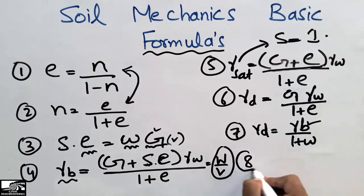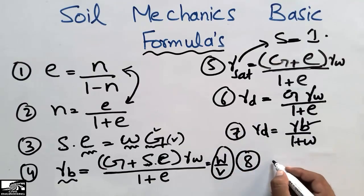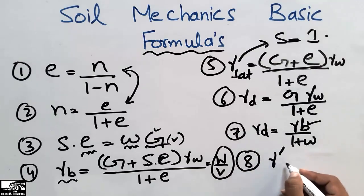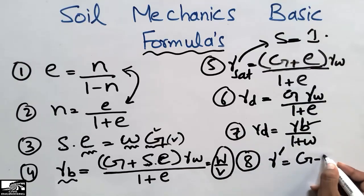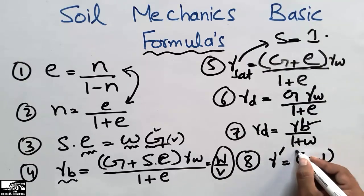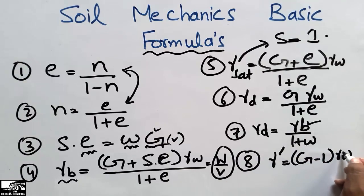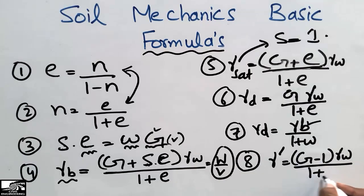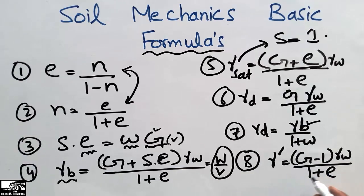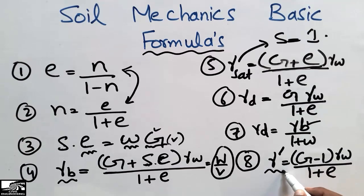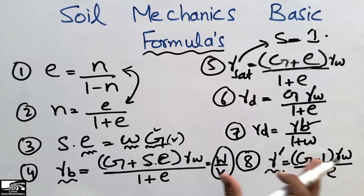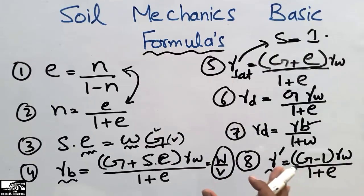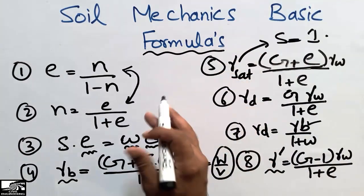The eighth formula is the submerged unit weight: γ_submerged = (G - 1) × γ_w / (1 + e), where γ_w is the unit weight of water and e is the void ratio. These were the eight basic formulas of soil mechanics that you will encounter when learning soil mechanics basics.